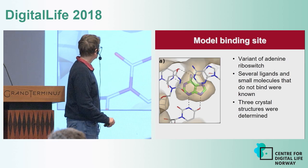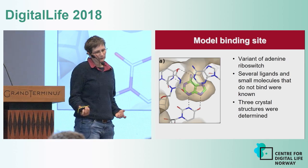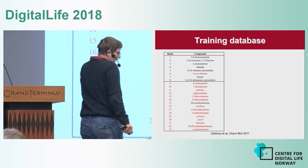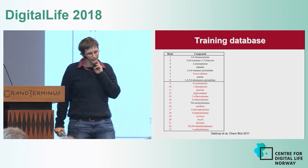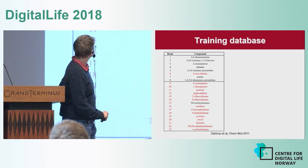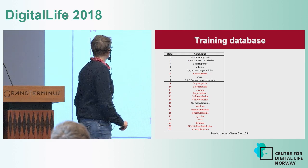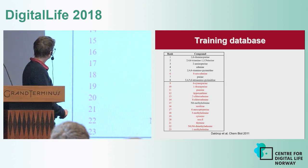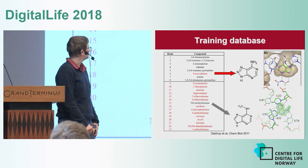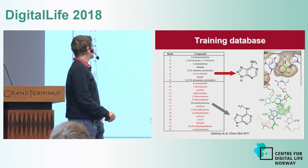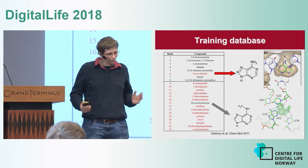Determining the binding modes computationally was quite easy. When we removed the small ligands from the binding site, docked them back in, we recovered the correct binding conformation. The next test was to separate known binders from known non-binders: we docked about 23 compounds and ordered them by score. Black labels indicate known binders, red labels indicate known non-binders — we got a quite good separation, with only two incorrect predictions, which we traced to tautomer prediction issues and a displaced water molecule in the binding site.